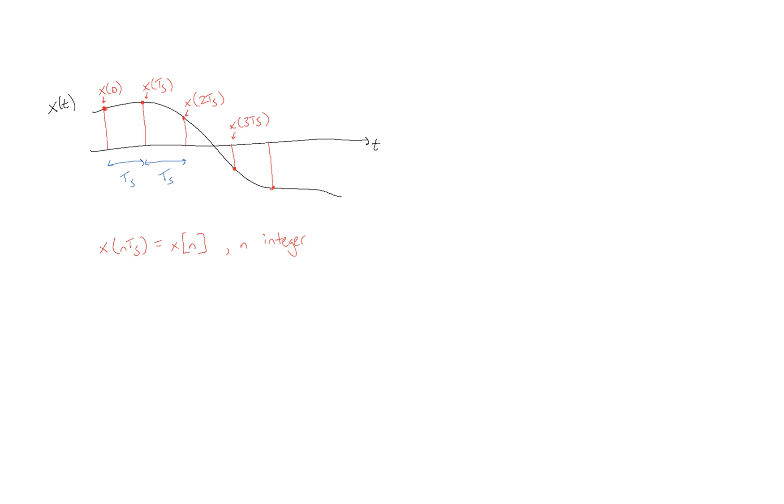So another way to write the same signal, the sampled signal, would be x of 0, x of 1, x of 2, and so on, instead of having to write t sub s every single time.